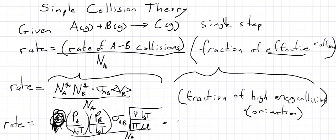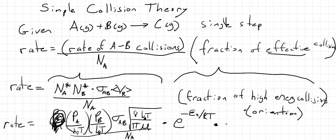What's the fraction of energy molecules that have enough energy? This would be e to the minus the activation energy of the reaction divided by RT. Molecules have a speed given by the Maxwell distribution, and the fraction of molecules that have a high speed is proportional to the negative of their kinetic energy over RT — so the higher the temperature, the bigger this fraction is going to be. We also have to multiply by the orientation effect; let's call that P. This is called the steric factor, and we'll come up with a theory for estimating it later, but for now let's just consider it an empirical parameter.